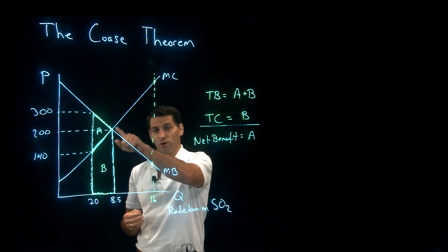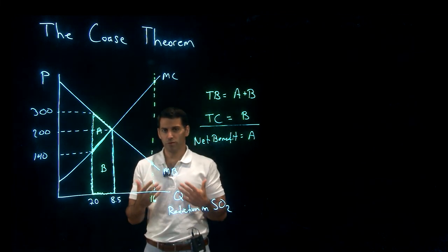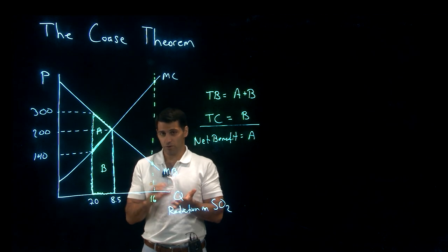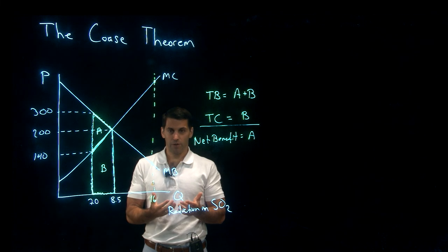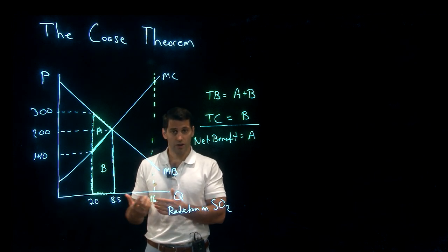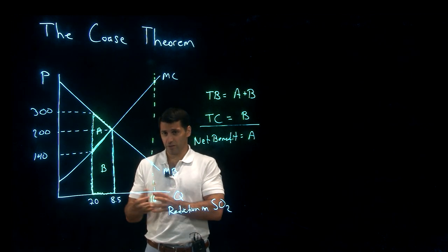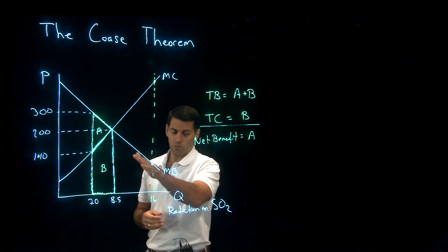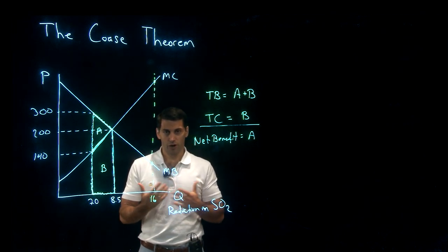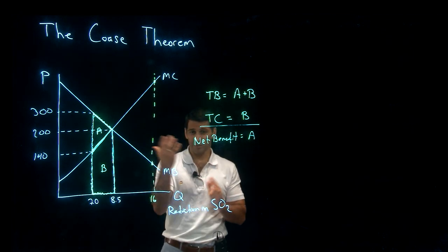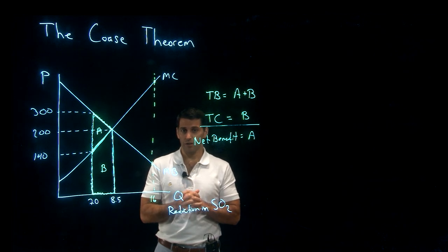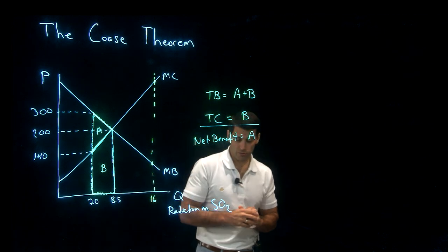Once we go beyond 8.5 tons of SO2 reduction, the marginal cost exceeds the marginal benefit. The marginal cost means we have to put resources into cleaning up — using technologies that capture SO2 before it's emitted raises the cost of electricity for households. Or we could use less electricity, but that too is a cost to society. We weigh those against the benefits of a cleaner environment, though it's not always clear how to put a dollar value on marginal benefits or what the exact costs will be.